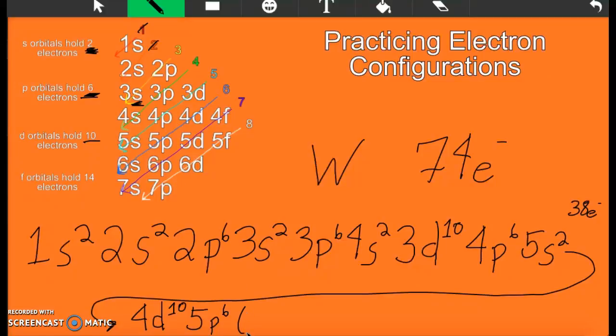So 6s. We're getting closer. 6s². Because it can still only hold 2. Then your next line. We're in an f orbital. We haven't done that yet. No panic. f's. Same thing. They just hold 14.